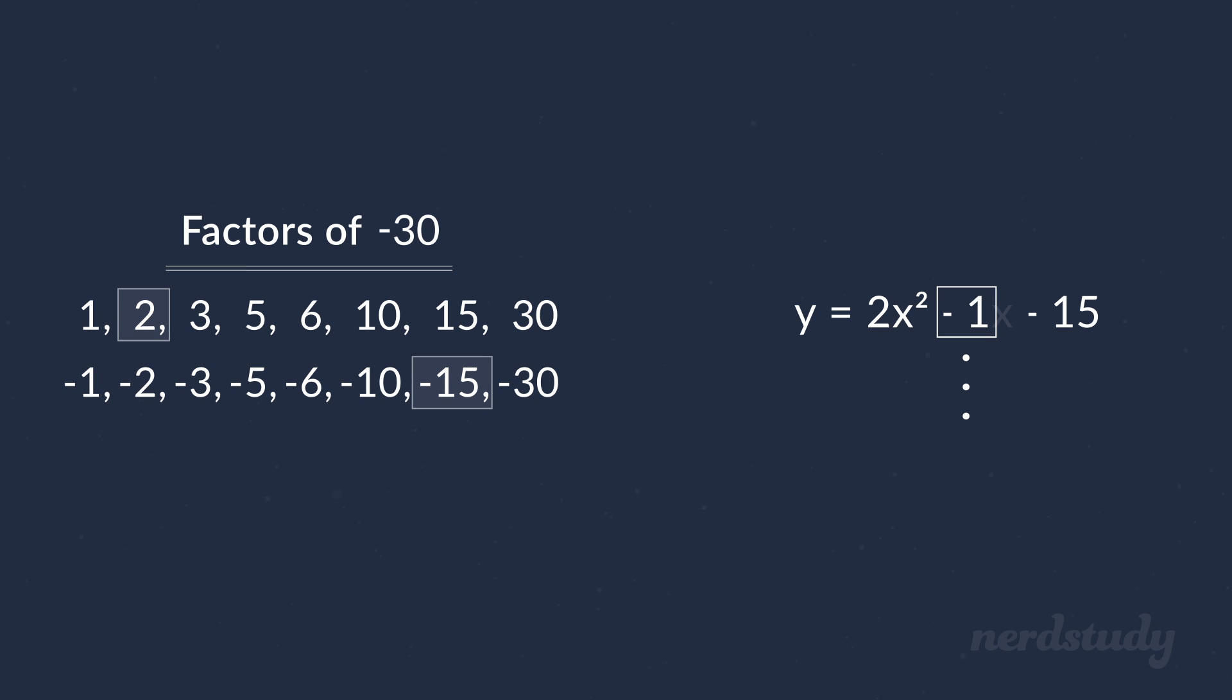2 and negative 15 are multiplied to become negative 30, but added together to become negative 13. Negative 2 and 15 are multiplied to become negative 30, but added to become 13. So those are out the window as well.